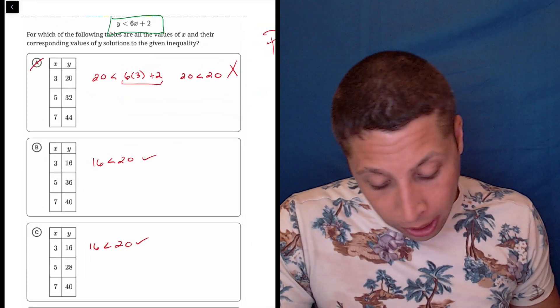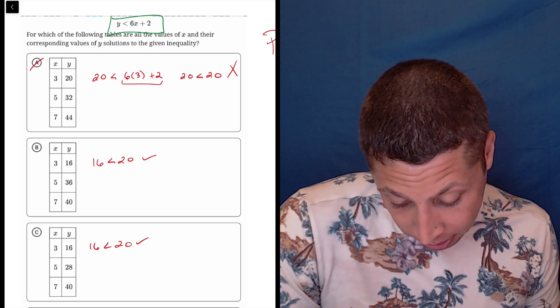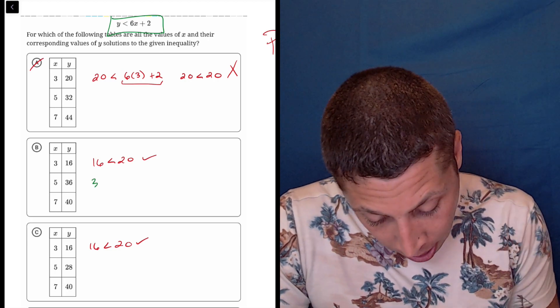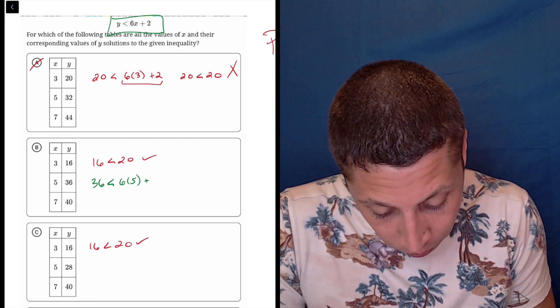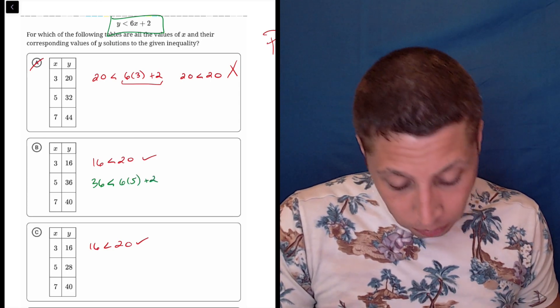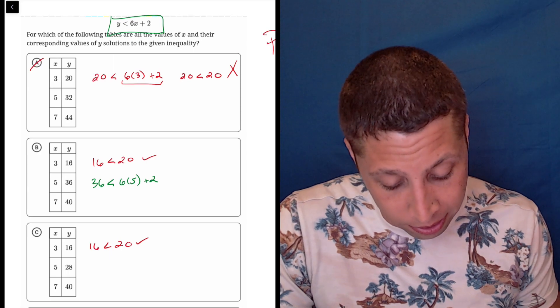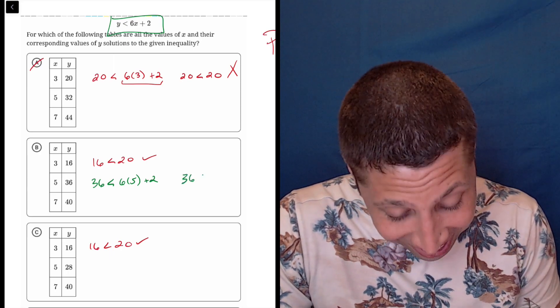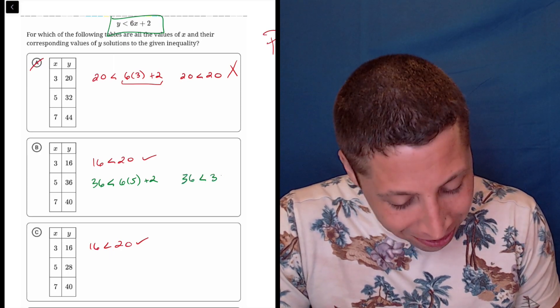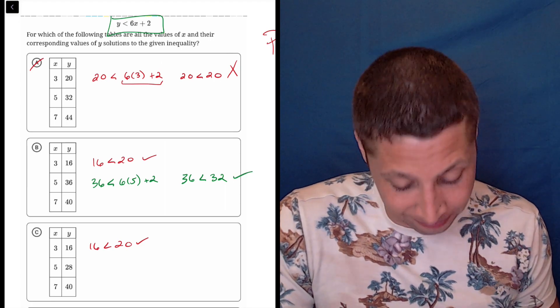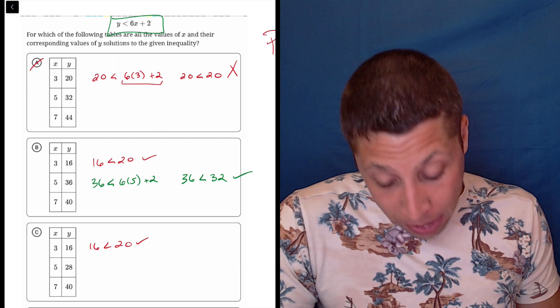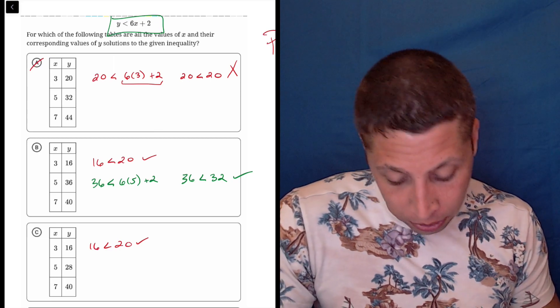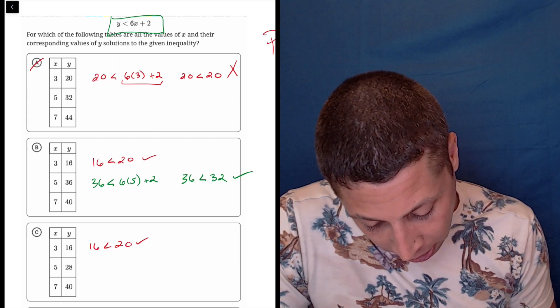We still have this inequality, the 5 part is different, so let's just do that. So 36 is the y, is less than 6 times 5 plus 2. So 36 is less than 30 plus 2 is 32, that works out. In this case I wouldn't pick B quite yet. I would need to look at C because it's possible that there's multiple things that work here.